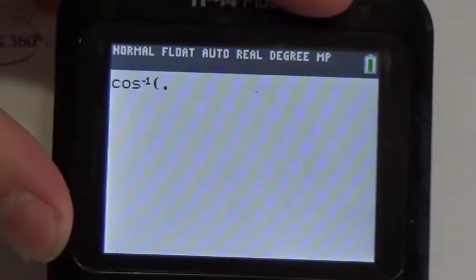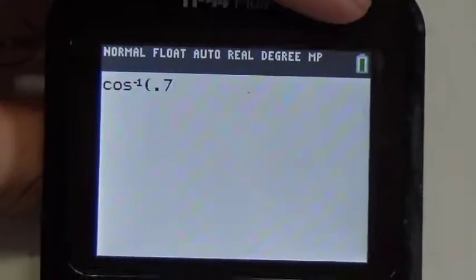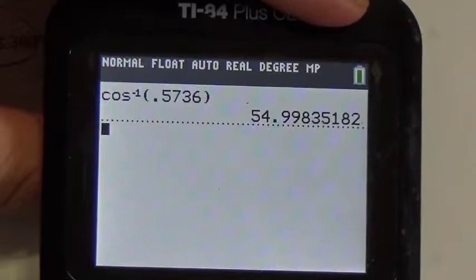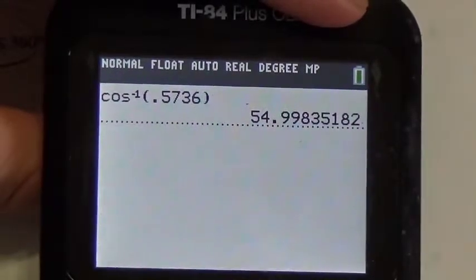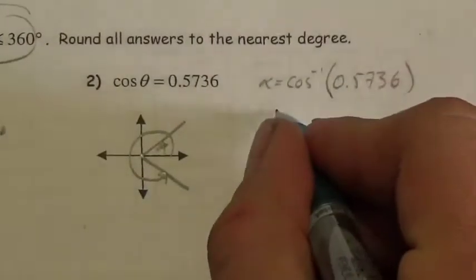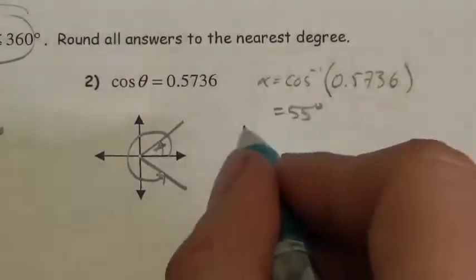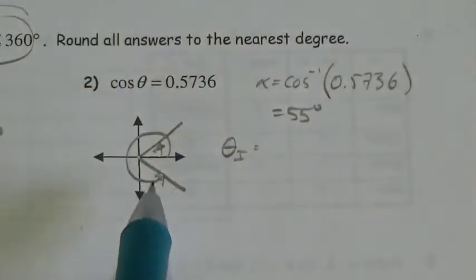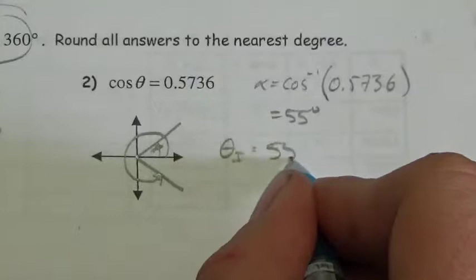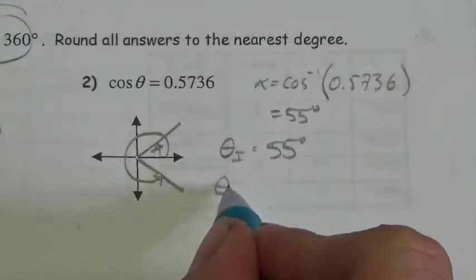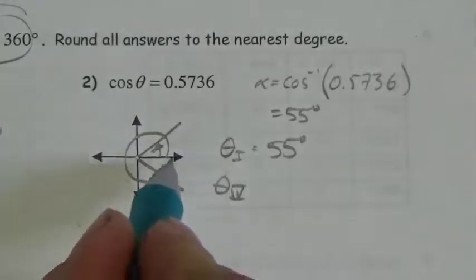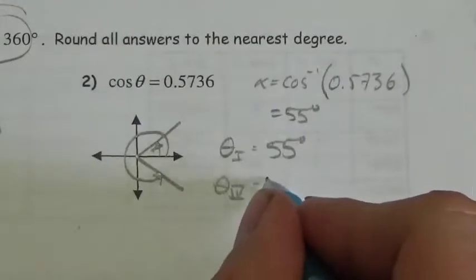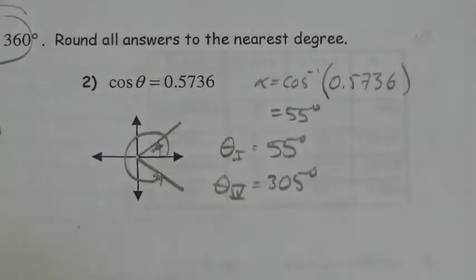Second cosine of 0.5736. That rounds really nicely to 55 degrees. So the angle inside the triangle is roughly 55 degrees. In quadrant 1, the reference angle and the rotation angle are basically the same thing — it's 55 degrees. In quadrant 4, that would be 360 degrees less the reference angle, so it's going to be 305 degrees.